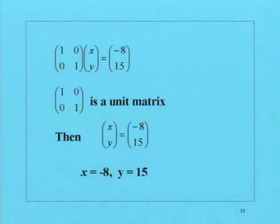We will now have the identity matrix (1, 0, 0, 1) times (x, y) equals (-8, 15). The unit matrix times the other matrix gives us the other matrix, so we have (x, y) = (-8, 15), which allows us to conclude that x equals -8 and y equals 15.